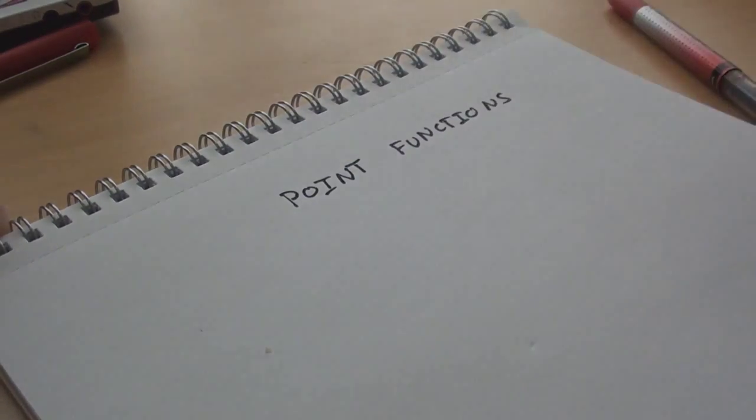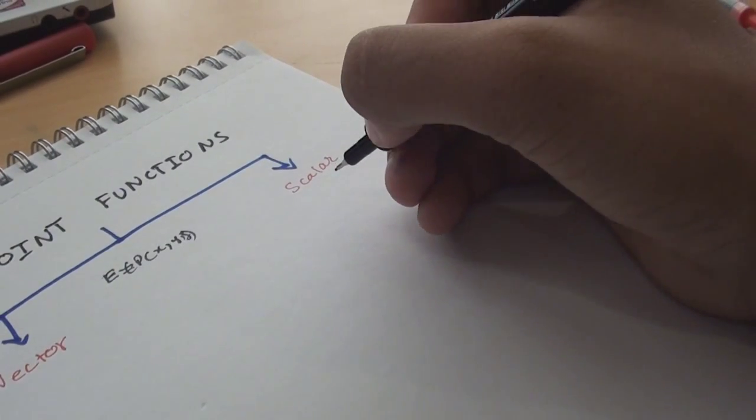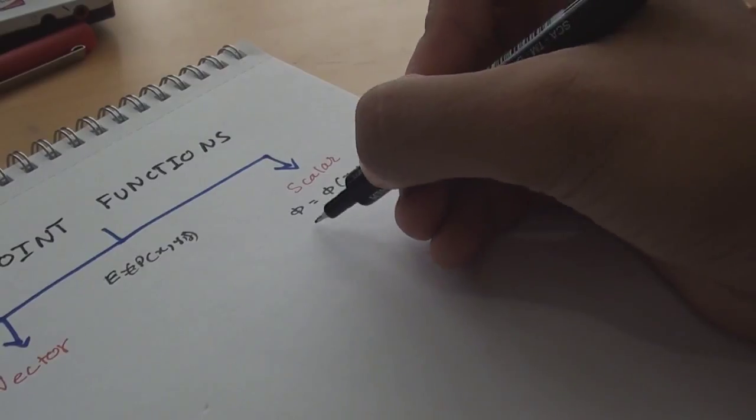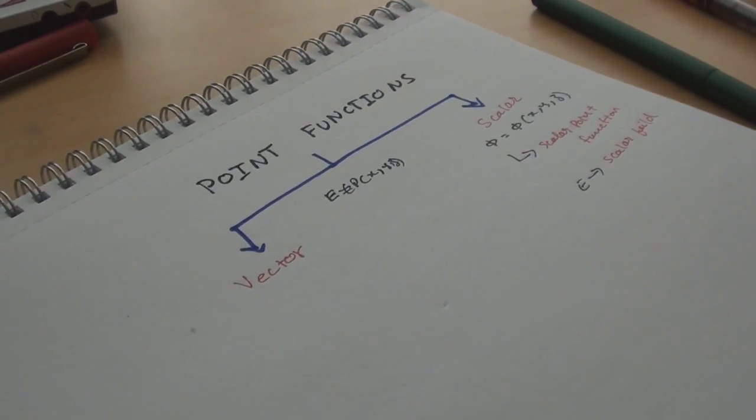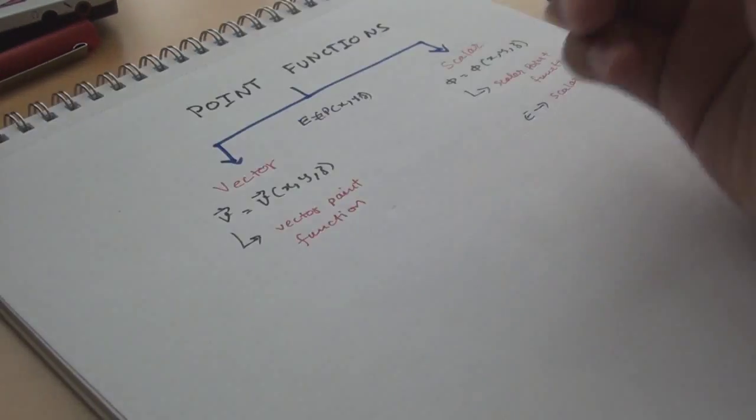However, what she meant was that there are two types of point functions, vector and scalar. Let E be a region at each point P of which scalar φ is specified. Then φ is a scalar point function and E is a scalar field. And if at each point a vector v is specified, then v is a vector point function and E is a vector field.